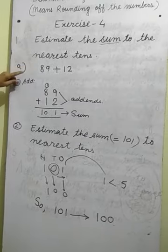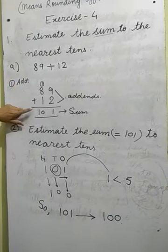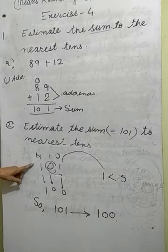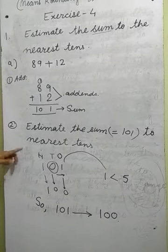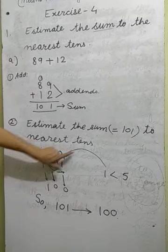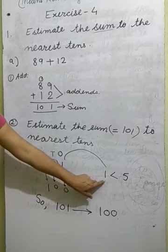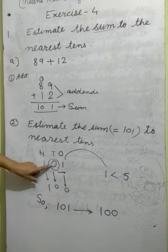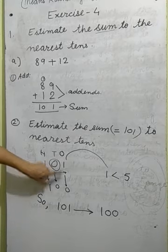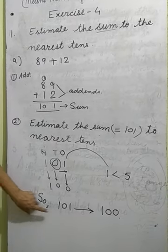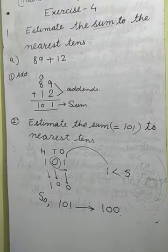To summarize: we estimate the sum to the nearest 10 by first adding the given numbers to find the sum, then estimating that sum. According to the rule, the tens place digit is circled, the right digit 1 is less than 5, so no change in the rounding digit. The right digit turns to 0 and the hundreds place digit remains the same. So 101 is rounded to 100. The answer is 100.